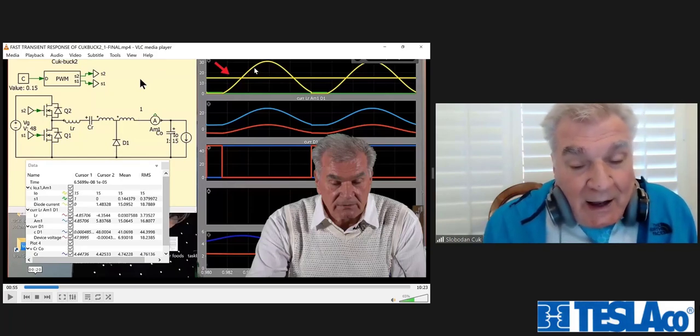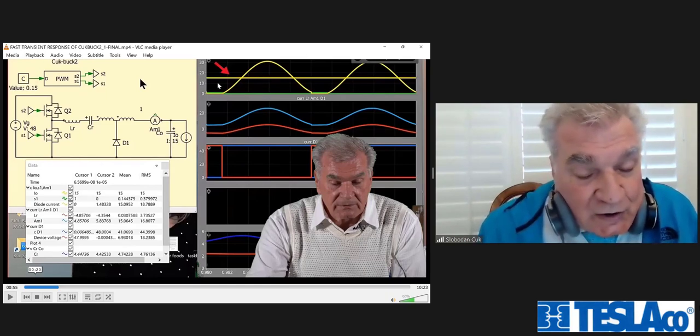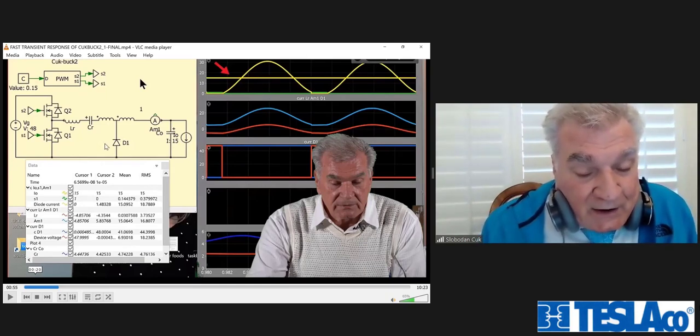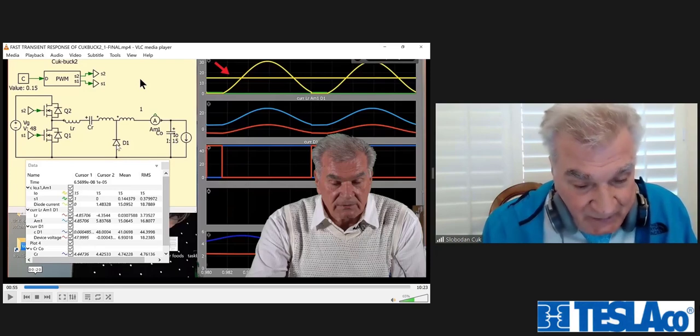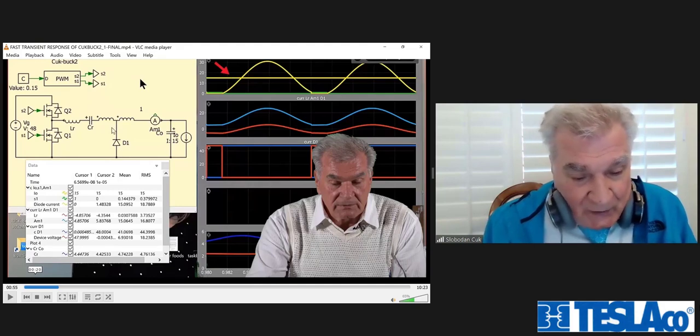But unlike this square wave current in the isolated tube converter, now I have a current in the primary, this diode current. You see the diode current? That is shown in yellow. Now there is a diode current.